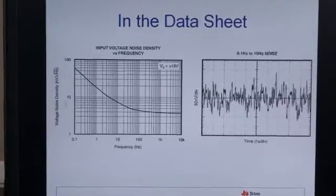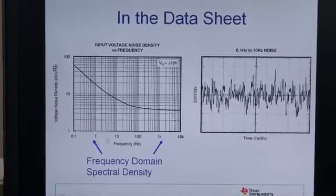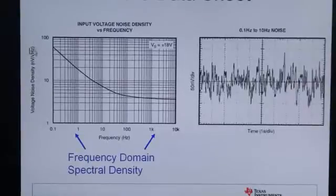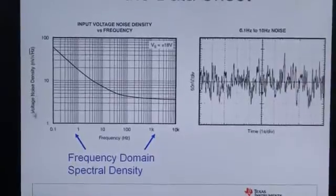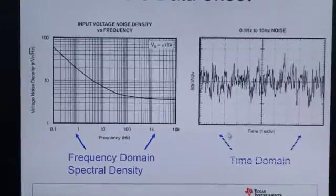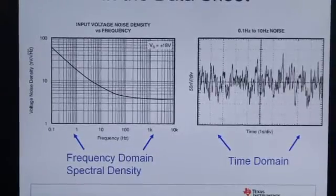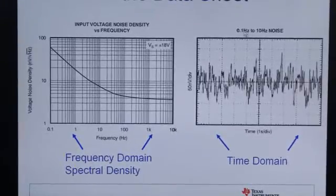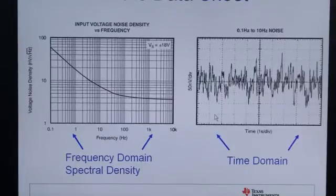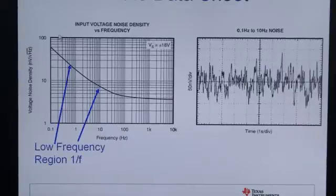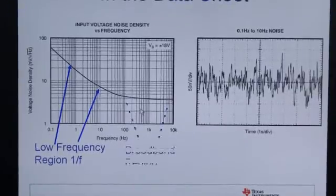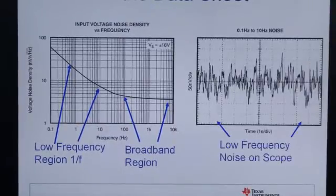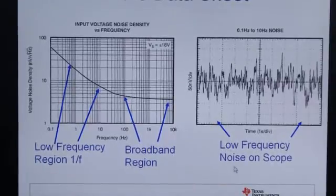In the data sheet, we're going to have a spectral density frequency. And that's what is shown here. It's the frequency domain representation. On the horizontal axis we have frequency. Vertical axis, we have volts and nanovolts per root hertz. We often have plots like this too. It's just an oscilloscope output plot or a time domain. But notice that it's limited from 0.1 to 10 hertz. So this is really only for looking at low frequency noise. The spectral density has a low frequency region and it has a broadband region as well. And the time domain, I just want to emphasize that it's low frequency noise on the scope.